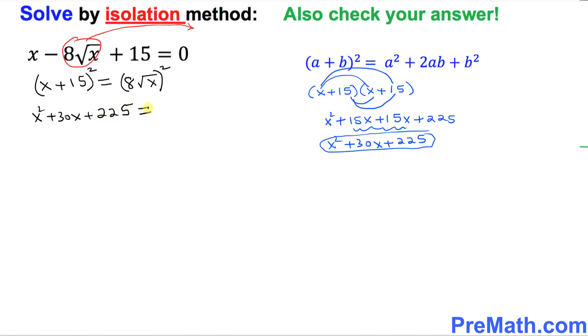And on the right-hand side, you can see 8 power 2, 8 square is going to be 64. And this square and square root, they cancel each other out. They undo each other, so we end up with x, so 64x.